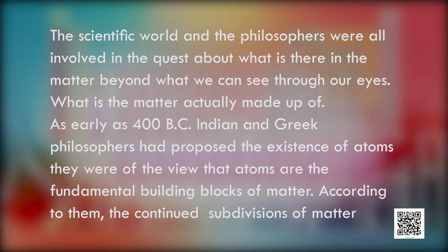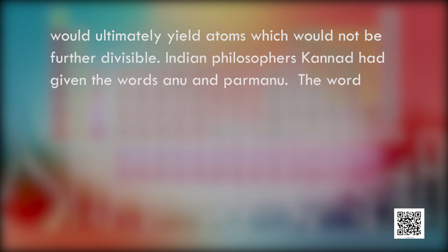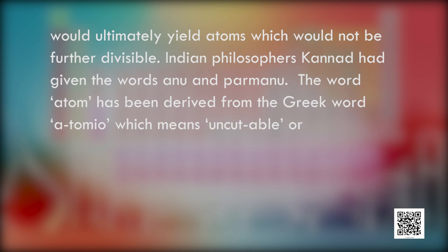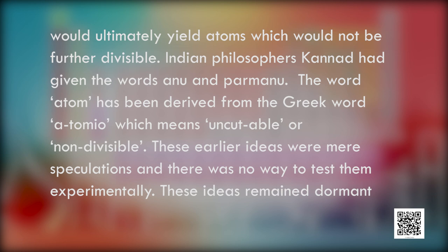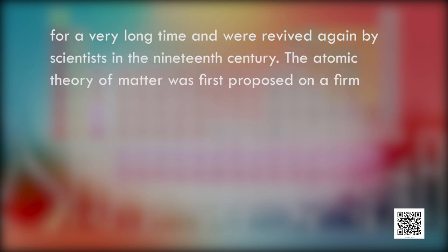According to them, the continued subdivision of matter would ultimately yield atoms which would not further be divisible. Indian philosophers like Kannad had given the subdivisibility of matter. The word atom is derived from the Greek word 'atomeo' which means uncuttable or non-divisible. These earlier ideas were mere speculations with no way to test them experimentally, and remained dormant for a very long time before being revived by scientists in the 19th century.